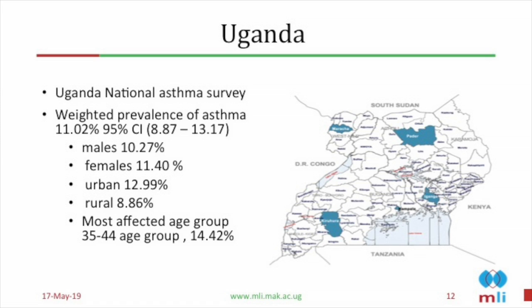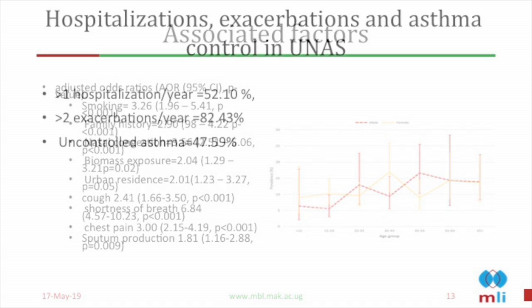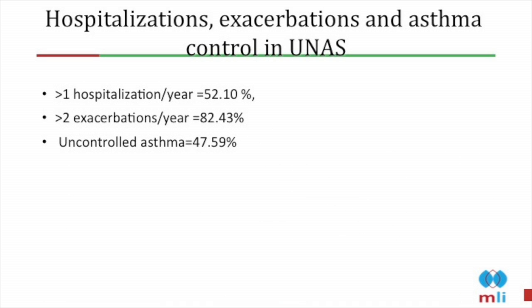Looking at the factors associated with asthma in Uganda, we found that smoking, family history, and allergies were associated, but notably exposure to biomass fuel had an odds ratio of 2.04. Studies have consistently shown that this is a key factor for asthma. The data also shows the bimodal distribution of asthma described in many textbooks — high prevalence among young people, with asthma tending to come back in the late 50s and 60s.